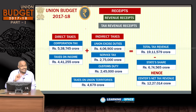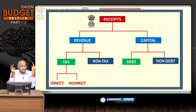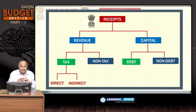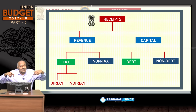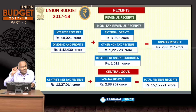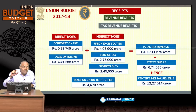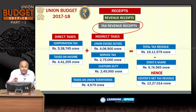Receipts of the central government are of two types: revenue receipts and capital receipts. Revenue receipts are further of two types: tax revenue and non-tax revenue. Tax revenue includes corporation tax — the highest — followed by income tax. These two are direct taxes. Excise duties is the highest among indirect taxes, followed by service tax and customs duty. Direct and indirect taxes together form total tax revenue, which is around ₹19 lakh crores.